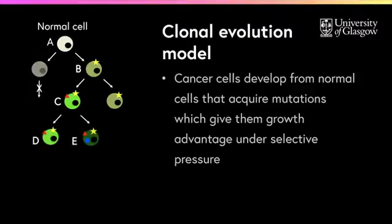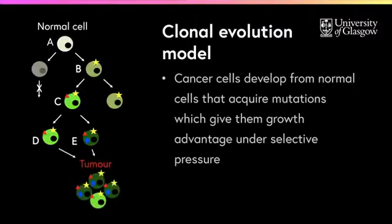Similarly, the daughter cell E can acquire a third mutation. The combination of these mutations leads ultimately to the acquisition of the hallmarks of cancer and allows for tumor growth initiation.